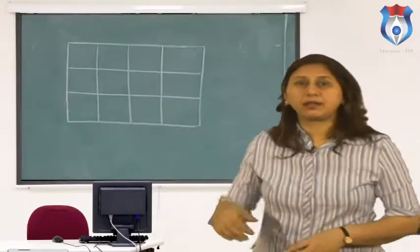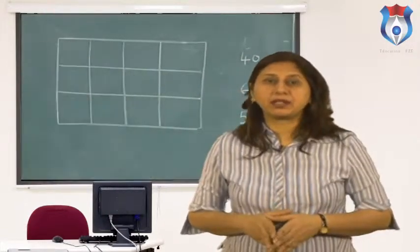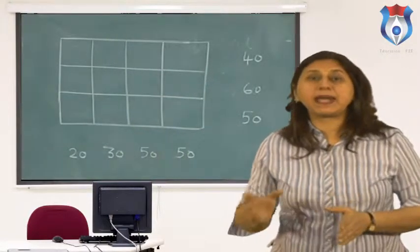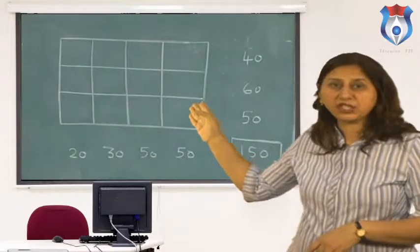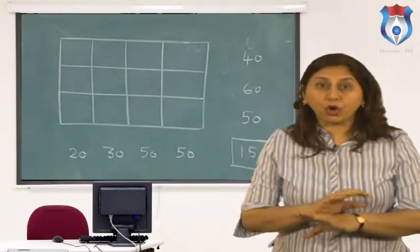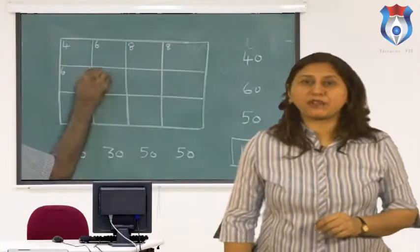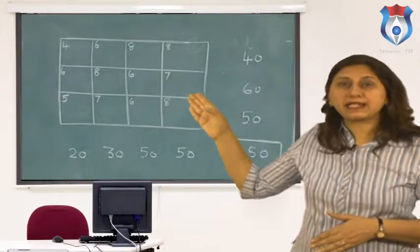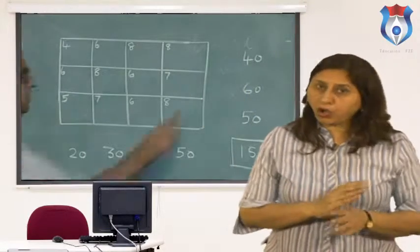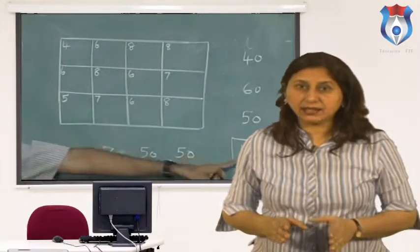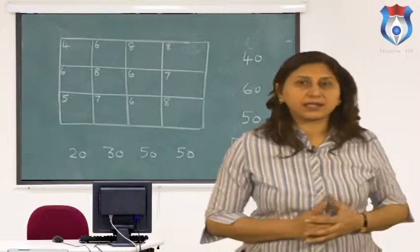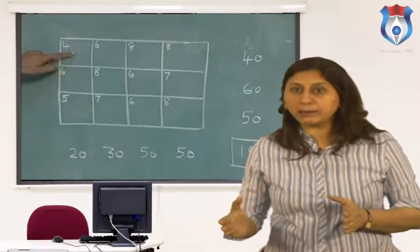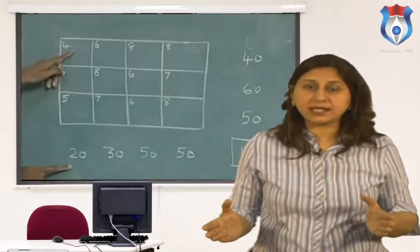Moving towards optimality, the steps are as follows. First, determine the net evaluations using the UV method. Since the net evaluation is zero for all basic cells, it follows that Z_ij minus C_ij equals U_i plus V_j minus C_ij for all basic cells (i, j). We can use this relation to find U_i and V_j using U_i plus V_j equals C_ij for all basic cells. After getting the values of U_i's and V_j's, we compute the net evaluation for each non-basic cell and display them in parentheses in the respective cells.